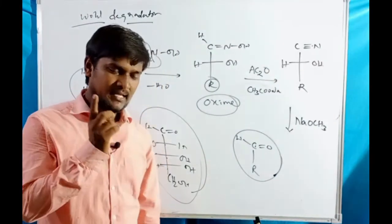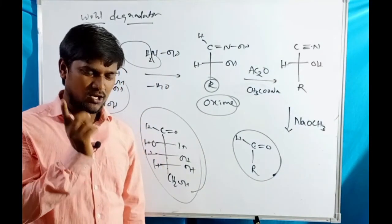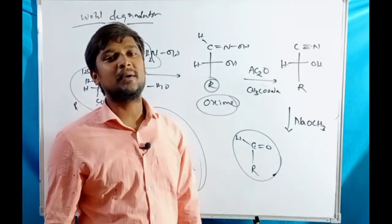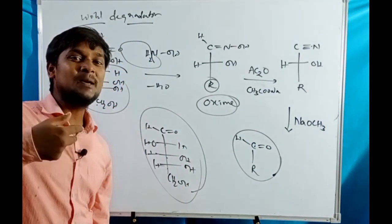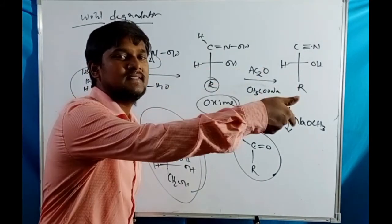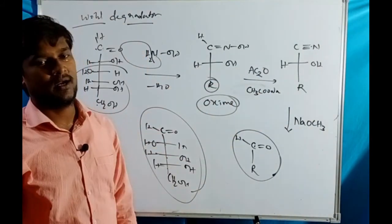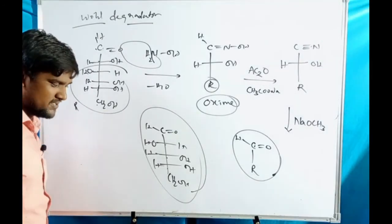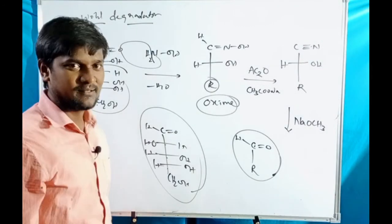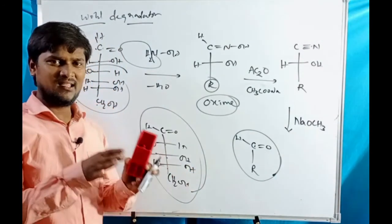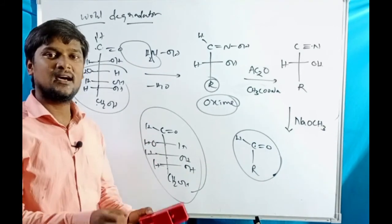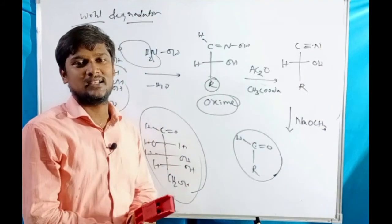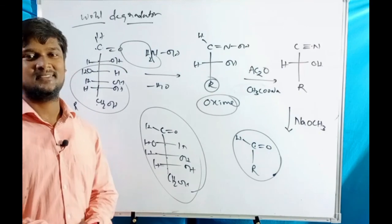In Kiliani-Fisher synthesis, a carbohydrate gives a C2 epimeric pair with one more carbon atom. In Ruff and Wohl degradation, C2 epimeric pairs produce the same carbohydrate with one less carbon atom. This is very useful for CSIR, JEE Advanced, and NEET students. Thank you so much for watching.